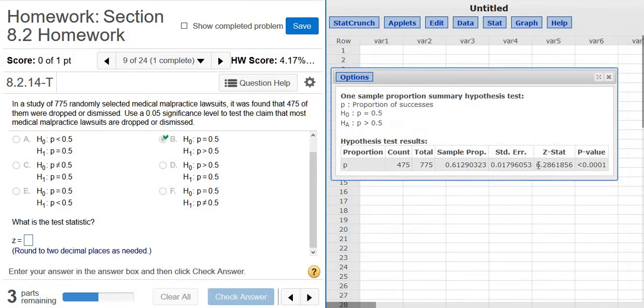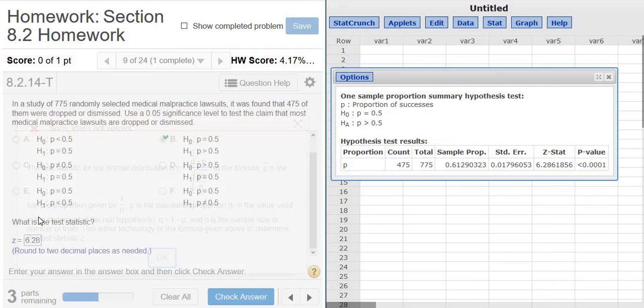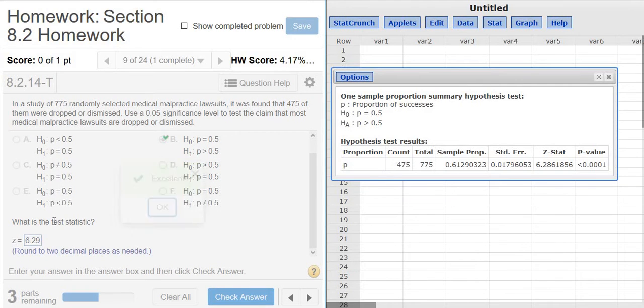And then here's our test statistic, ZStat. So it's going to be Z equals 6.29 because it wants two decimals. So 6.29. Oh, got it wrong. Oh, I typed it in wrong. 6.29. Okay.